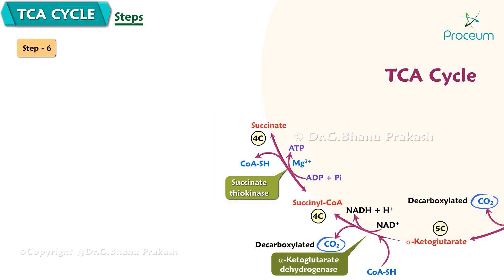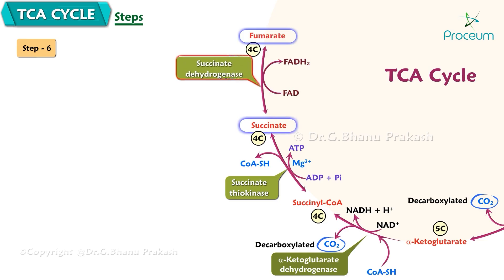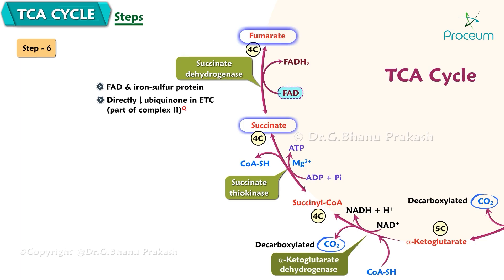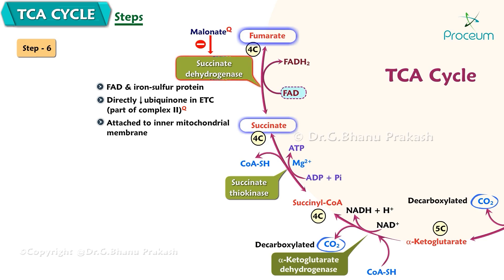Step 6: Conversion of succinate (4C) to fumarate (4C). Succinate undergoes dehydrogenation by succinate dehydrogenase, forming fumarate. The enzyme contains FAD and iron-sulfur protein. The enzyme directly reduces ubiquinone in the electron transport chain, as part of complex II. It is the only enzyme in the citric acid cycle attached to the inner mitochondrial membrane. Succinate dehydrogenase is inhibited by malonate.